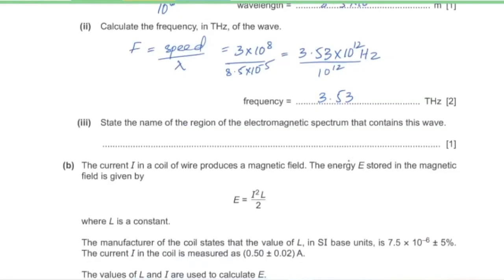Part 3: State the name of the region of the electromagnetic spectrum that contains this wave. For this part you must know the range of frequencies or wavelengths for each region. Infrared has a frequency range from 300 gigahertz to 400 terahertz, so this wave is infrared.